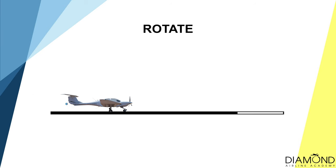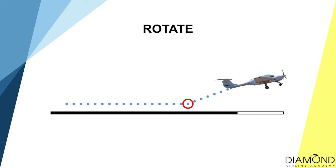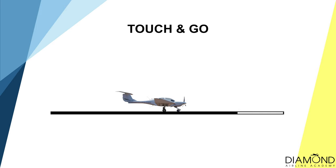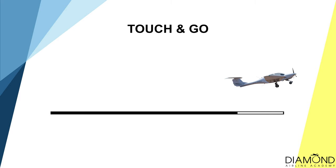Now let's dive into some definitions regarding circuit training. The first one is rotate — when an aircraft accelerates on the runway to a certain speed and then raises the nose to take off. Touch and go means that after the aircraft touches down on the runway, it doesn't stop but instead applies full power and takes off again.